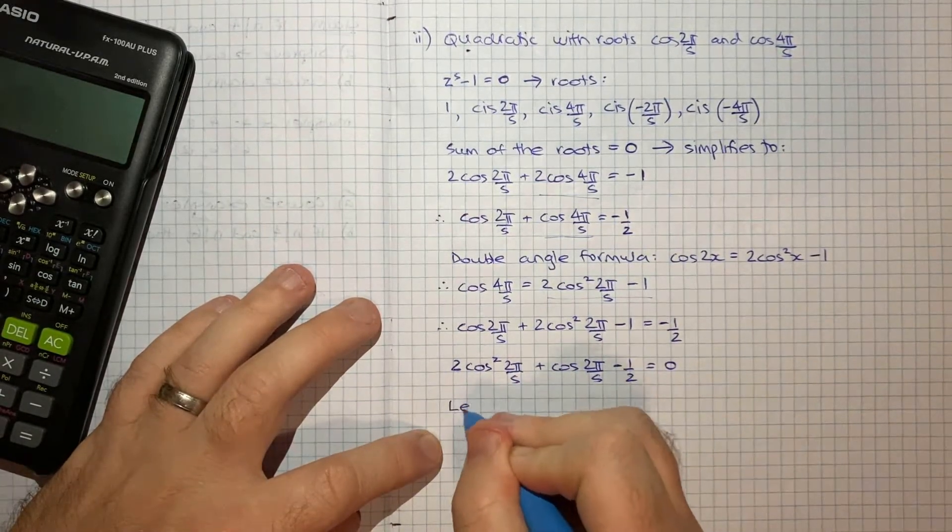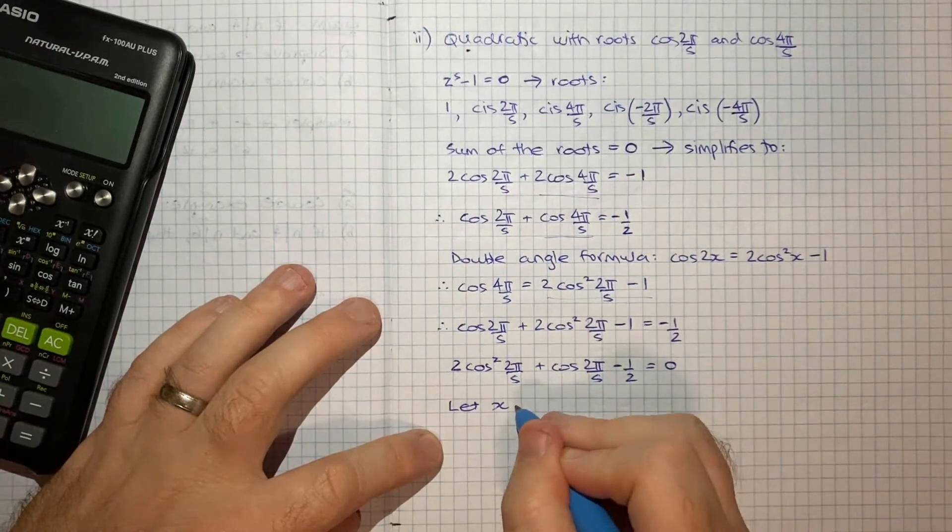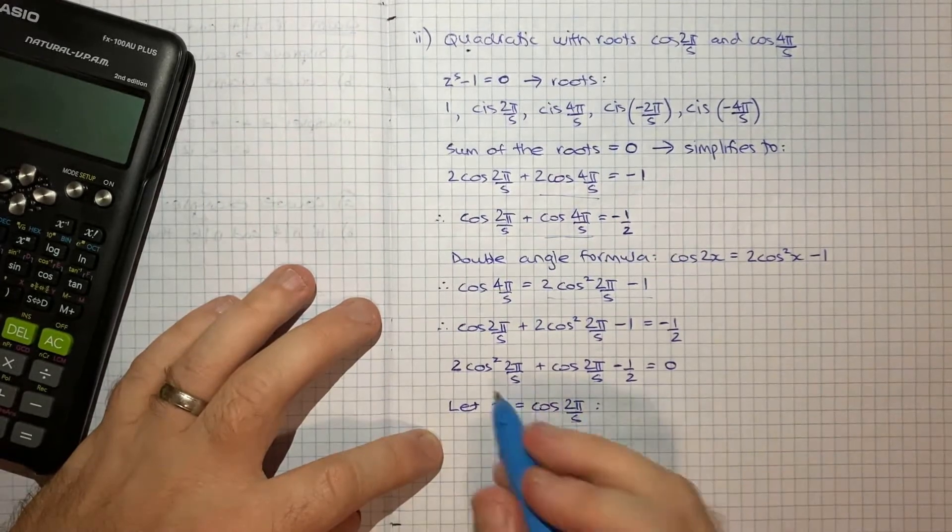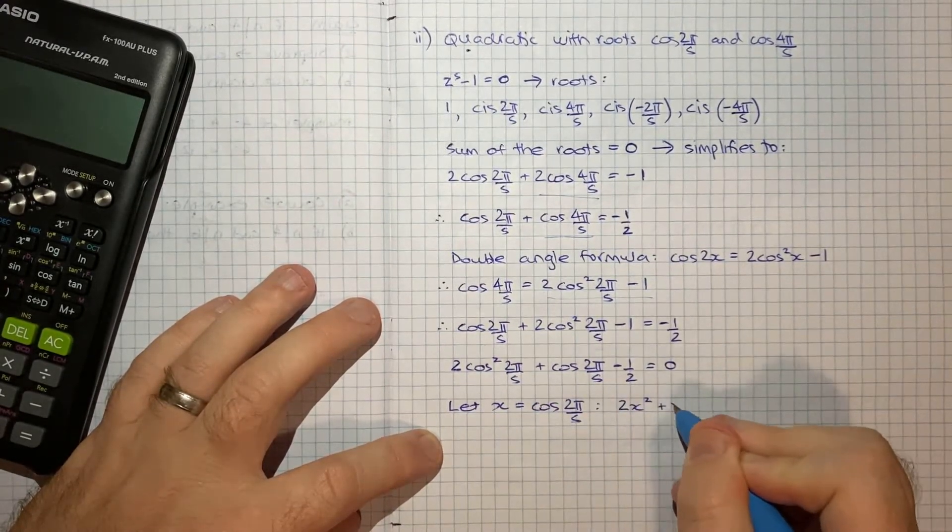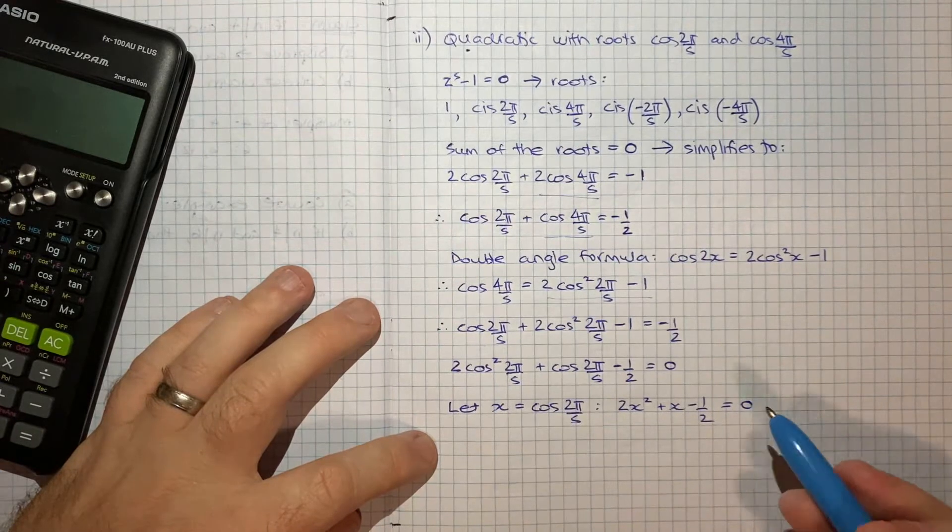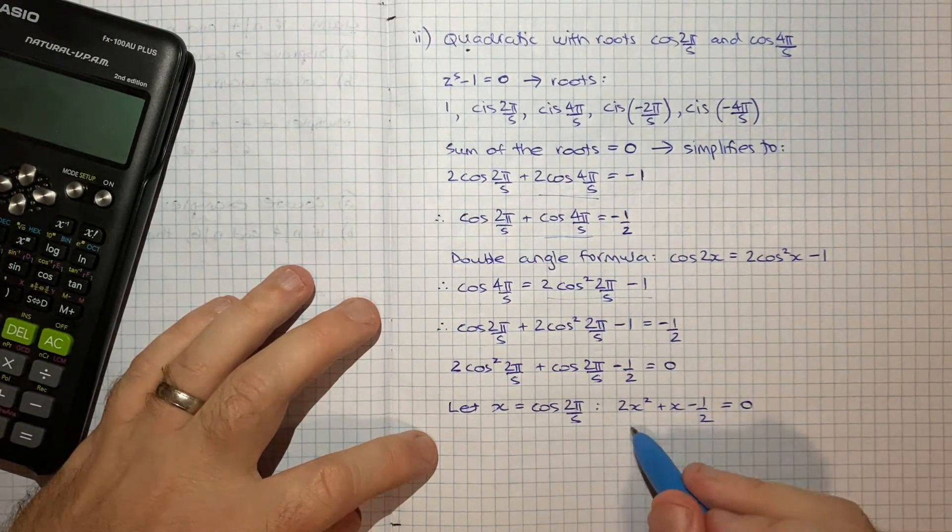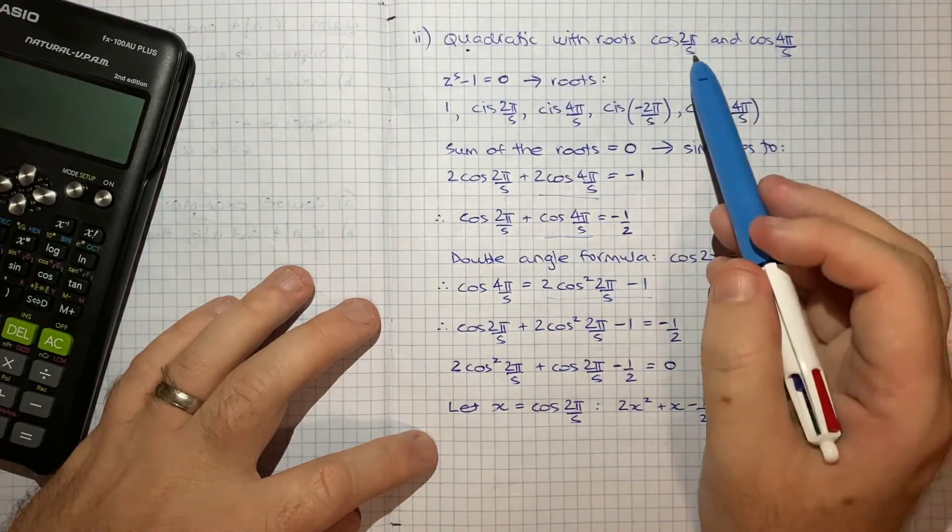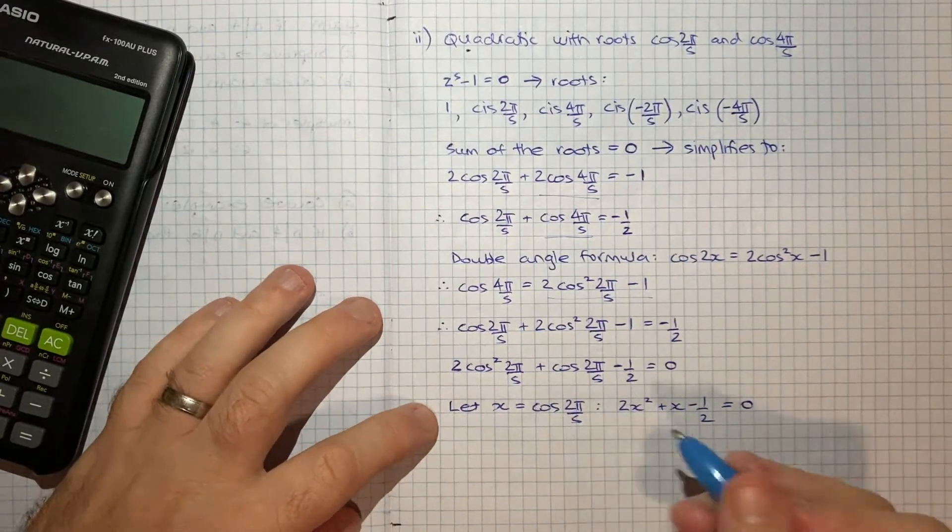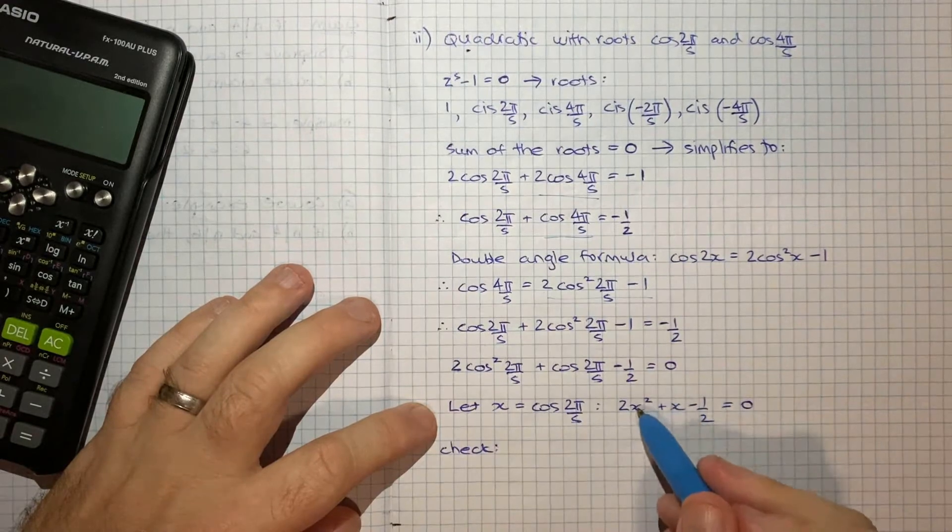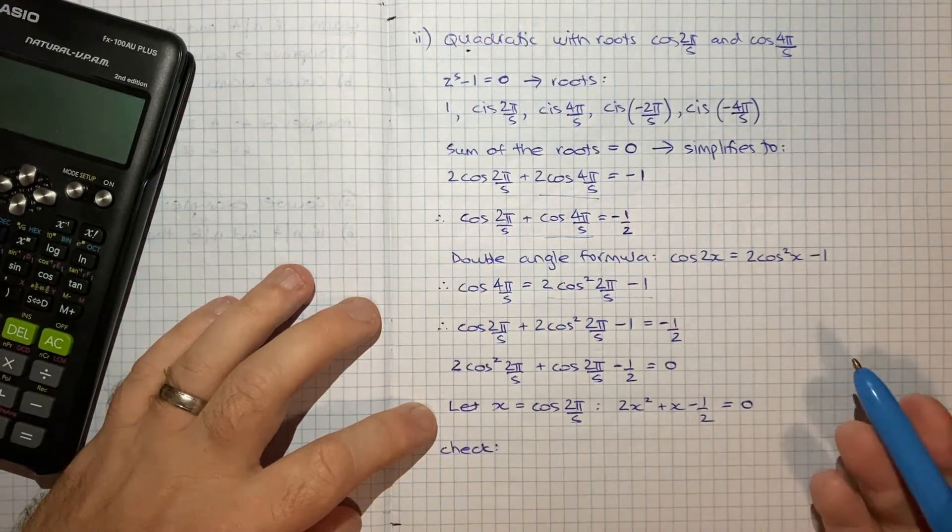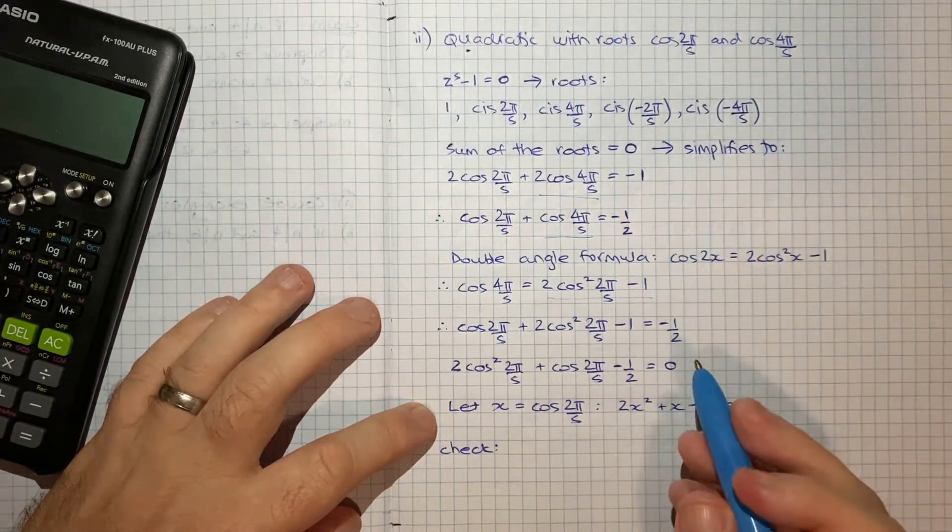So that is a result that we know is true. So if we let x equal cos 2π/5, then we'll get 2x squared plus x minus 1 half equals 0. And the result is that this quadratic will have roots of cos 2π/5 and cos 4π/5. And it's very easy to test. So let's first check cos 2π/5.